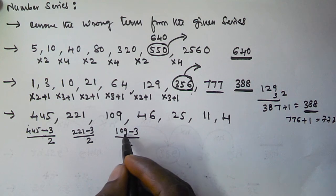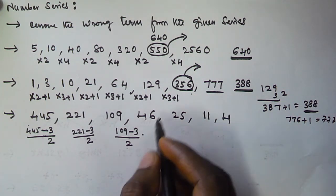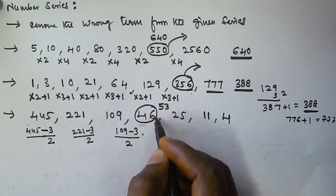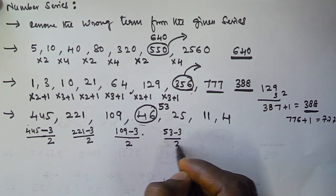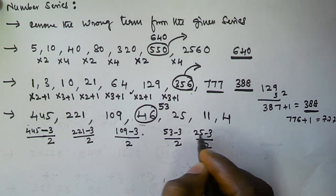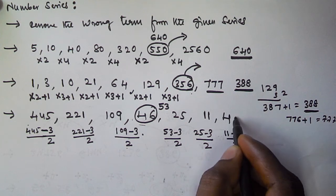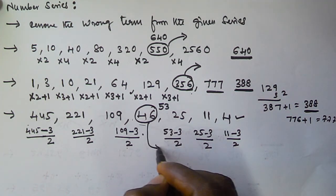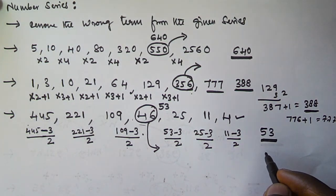So here we should get 53, but we have 46. Continuing with the right term: 53 - 3 = 50, 50 / 2 = 25. Then 25 - 3 = 22, 22 / 2 = 11. Then 11 - 3 = 8, 8 / 2 = 4. So in this series the wrong term is 46, and we have to replace it with 53.